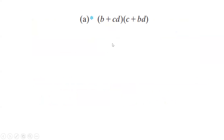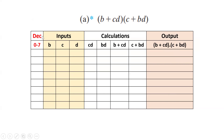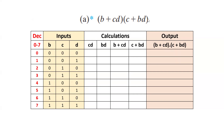Now let us start with part A. Here is the given boolean function. In this function, we have three input variables B, C, D. Based on these three input variables, we should prepare a truth table to find the output. The first column specifies the decimal values from 0 to 7, based on the number of input variables. The next column provides the calculations to find product terms and sum terms. The last column indicates the output value for the given boolean function.